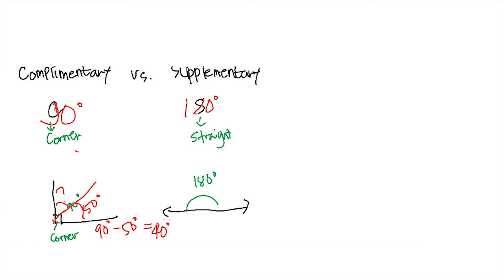Notice that the two angles form a right angle when together. This means that the angles are complementary and have a sum of 90 degrees. The missing angle measures 40 degrees.